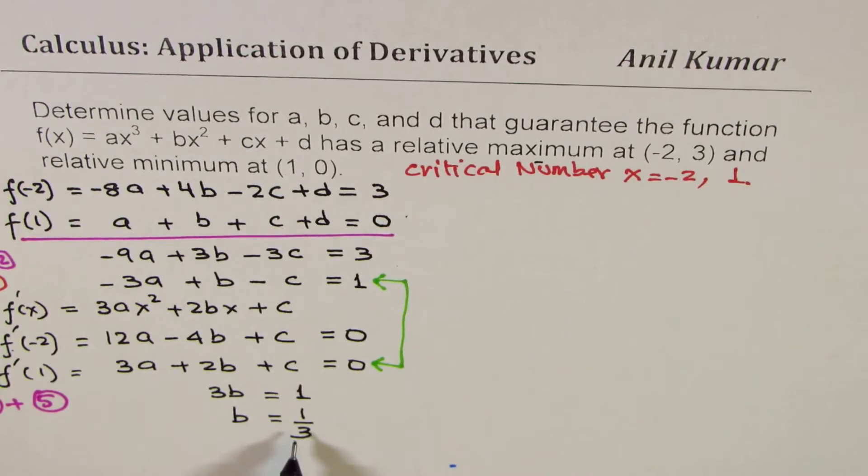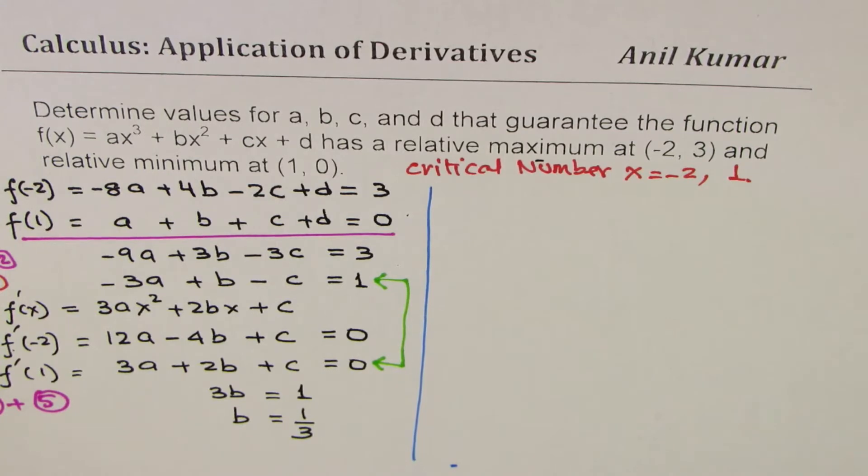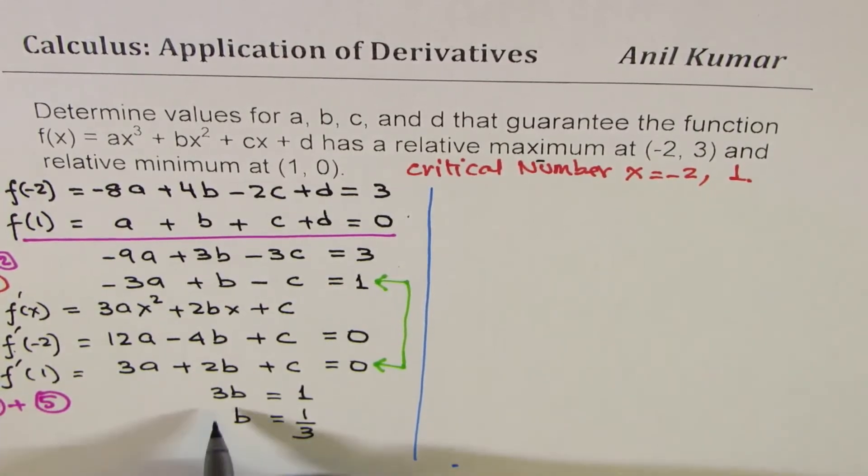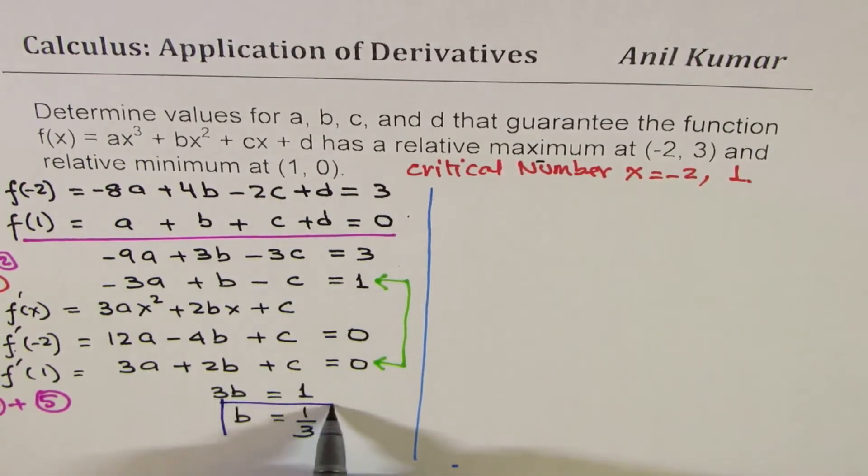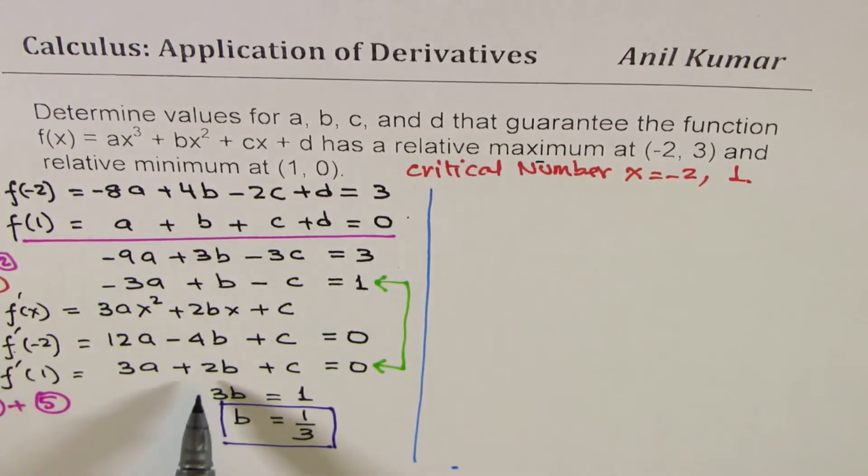Now, once we know one of these values, then we can get all the others. I would actually like you to pause the video at this stage and find the other values. So we know b, let me highlight this. b = 1/3. Now, if I do equation 4 and 5, I can get rid of c and then we can find what a is since we know what b is.